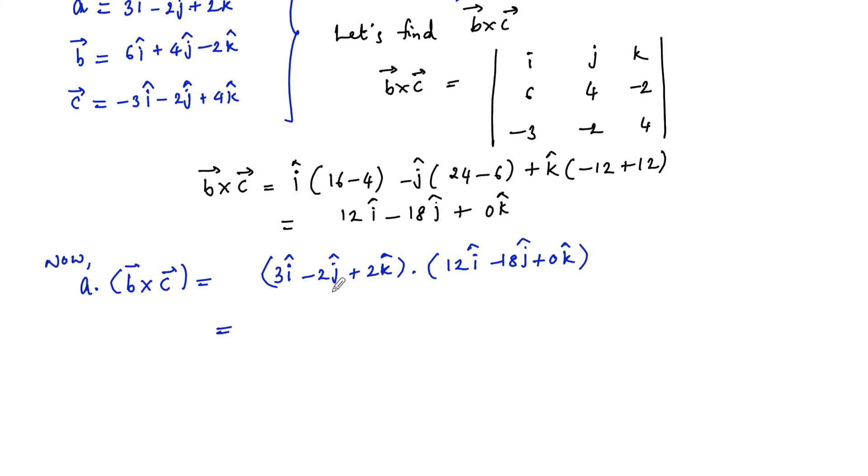Let's find the dot product by multiplying the scalar components of i, j, k respectively. So 3 times 12 plus minus 2 times minus 18 plus 2 times 0.